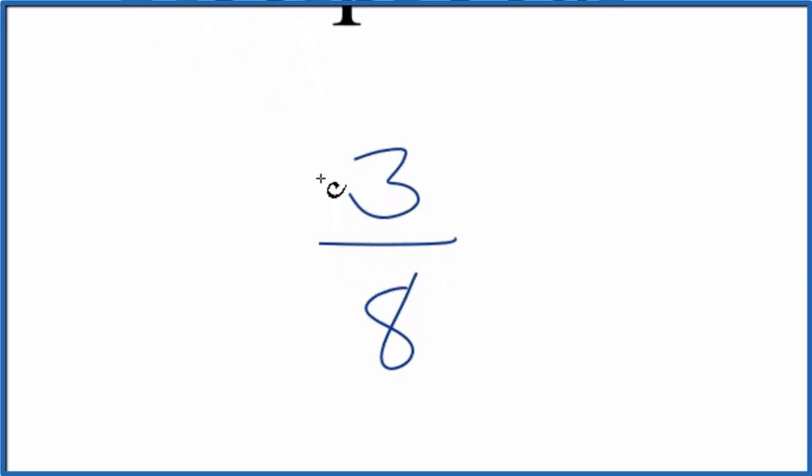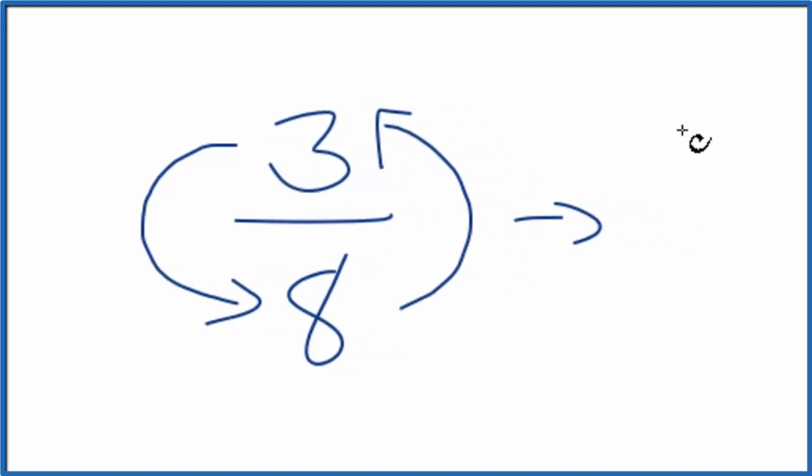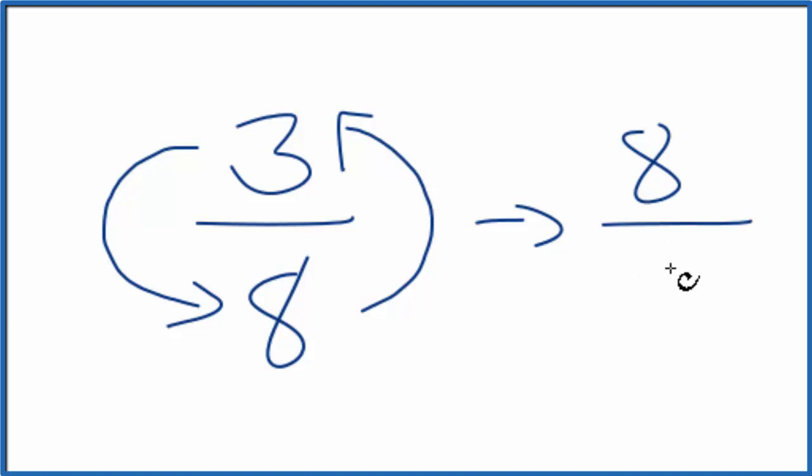And to do that, we can take the numerator, the 3, move it down here, and move the denominator up top. So we end up with 8 on top and 3 on the bottom.